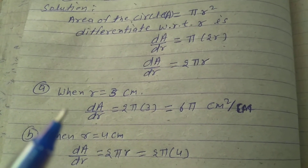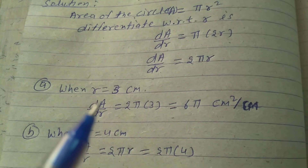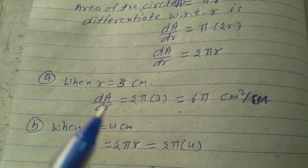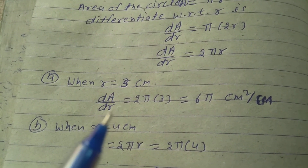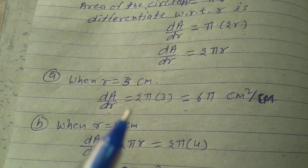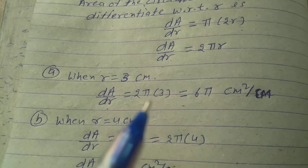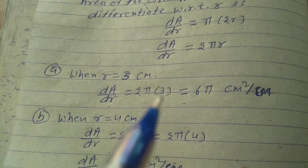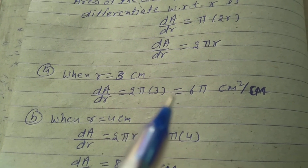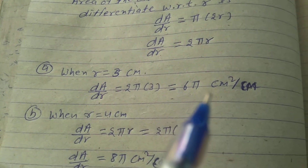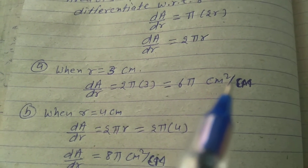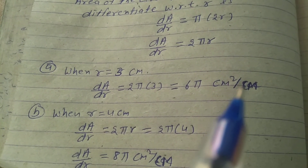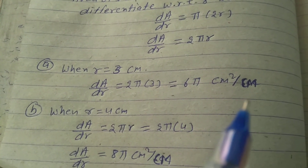When r is equal to 3 cm, dA upon dr is equal to 2 pi bracket 3, which is equal to 6 pi cm square per cm.